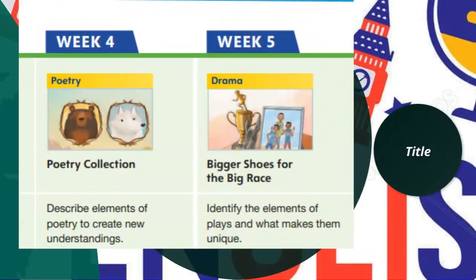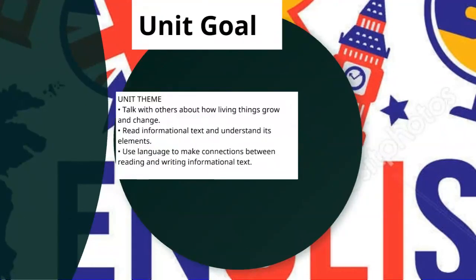In week four we will learn about a new genre — poetry — and describe the elements of poetry. In week five we will learn about drama, read 'Bigger Shoes for the Big Race,' and identify the elements of the play. The unit goal is: we will talk with each other about how living things grow and change, read informational text and understand its elements, and use language to make connections between reading and writing.